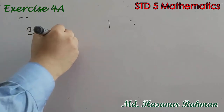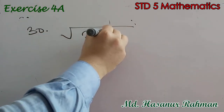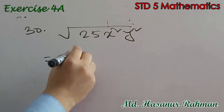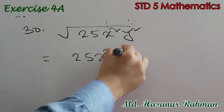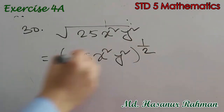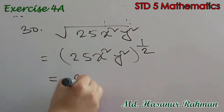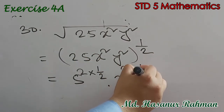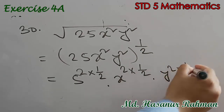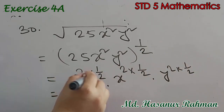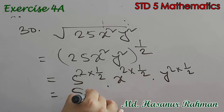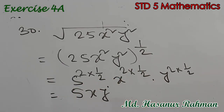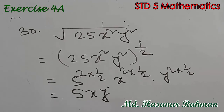Number 30 says root over 25x squared y squared. Square root means power will be half. Since 25 is 5 squared, we get 5 to the power 2 into half, x to the power 2 into half, y to the power 2 into half. Each gives 2 divided by 2 which is 1, so we get 5, x, and y. The answer is 5xy.